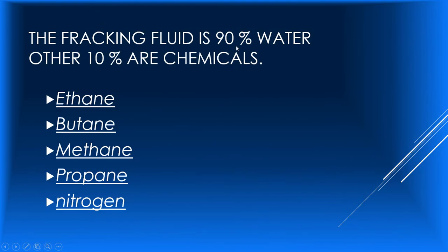The fracking fluid is 90% water. The other 10% are concentrated chemicals. Ethane, butane, methane, propane, and nitrogen are gases we get from fracking.